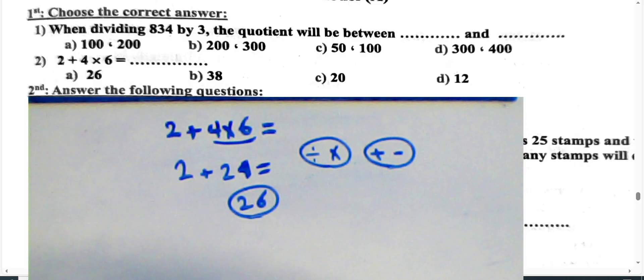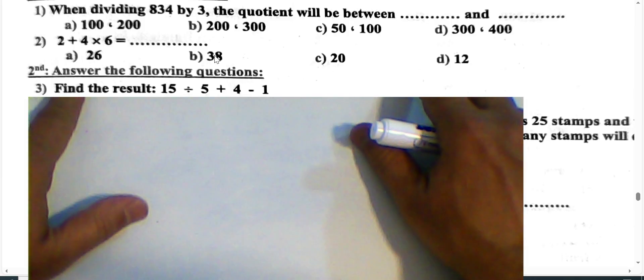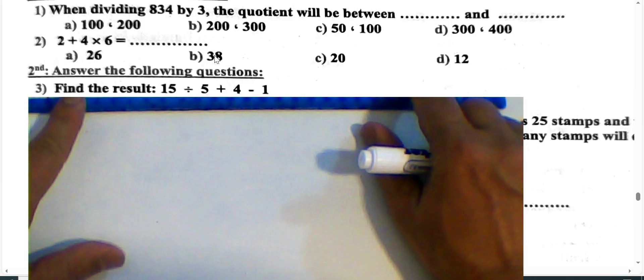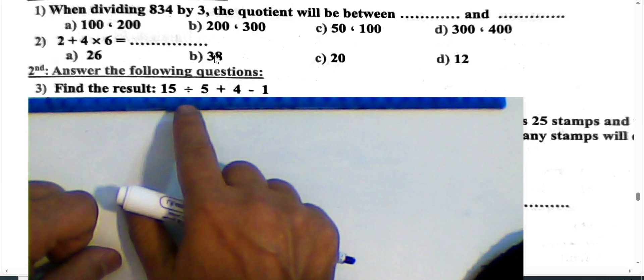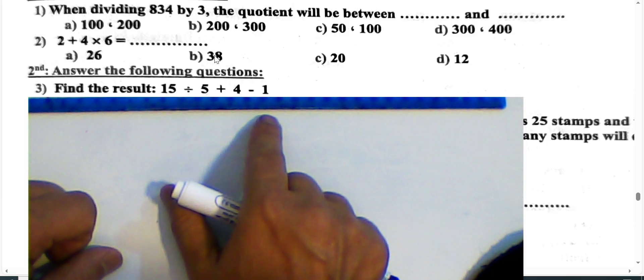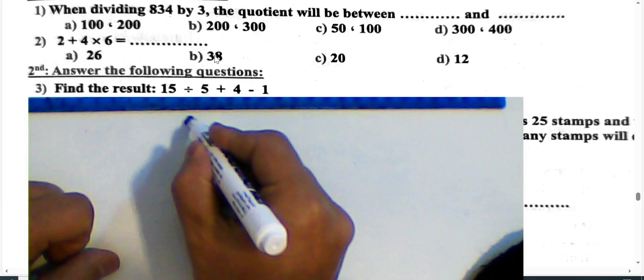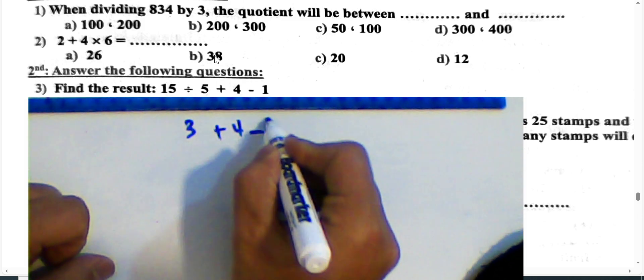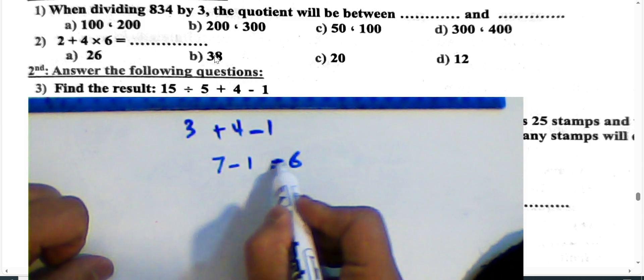Question 3: Find the result of 15 divided by 5 plus 4 minus 1. This is also order of operations — division first: 15 divided by 5 equals 3; then addition and subtraction left to right: 3 plus 4 is 7, and 7 minus 1 equals 6.